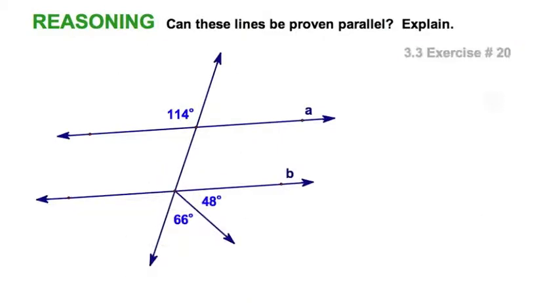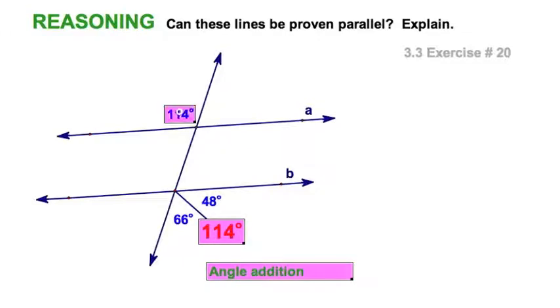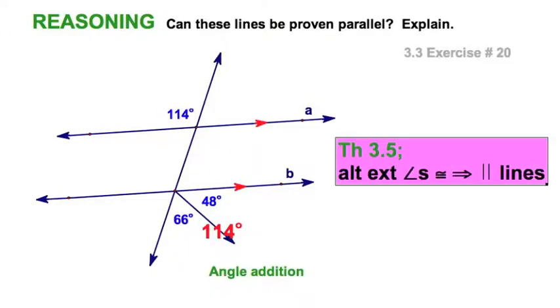Here's an easy one. Number 20. Angle addition gives us 114 degrees down here. Got 114 degrees there. Those are alternate exterior angles. And that makes the lines parallel.